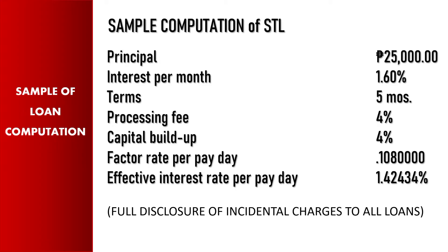To understand fully how to compute your loans at your Ecolocan Multipurpose Cooperative, let's take an example of the computation of a short-term loan. According to Republic Act 3765, there must be full disclosure of all incidental charges. This includes stating the principal amount, the interest per month or add-on interest, the terms of the loan, the processing fee, the capital build-up, the factor rate per payday, and the effective interest rate per payday. All of this information should be reflected on the loan application of the member.